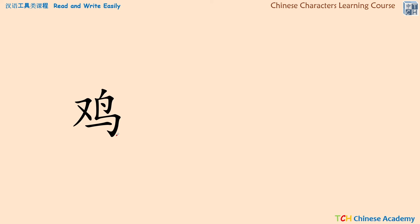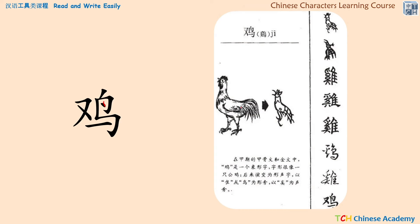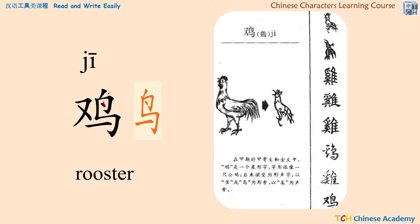How about this character — which animal does it represent? Maybe you'll notice this dot indicating the eye of something. Yes, this one is based on the picture of a rooster, and it's pronounced 'jī.' Look at the very original form — it's complicated with a lot of strokes but very vivid, like a pictograph. This character has two parts: the right part is the radical meaning 'bird,' so any character with the bird radical falls into that category. So 'jī' — rooster.